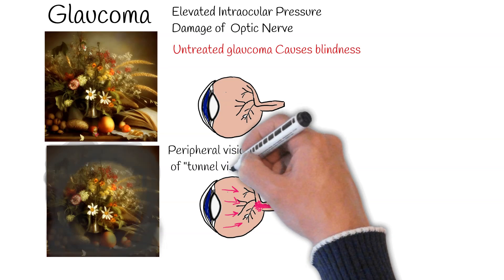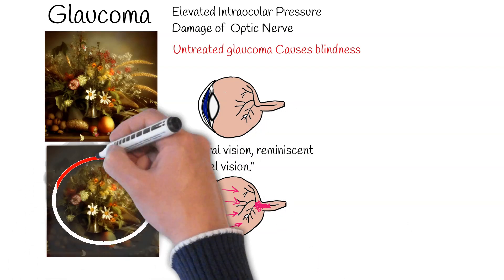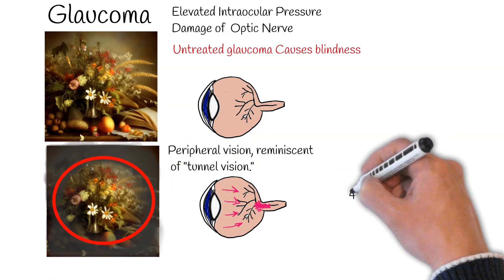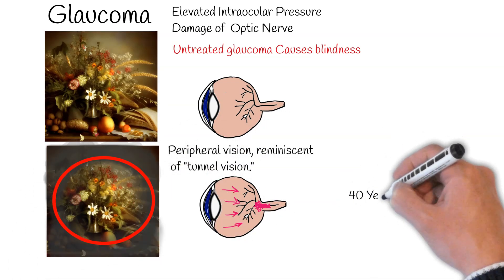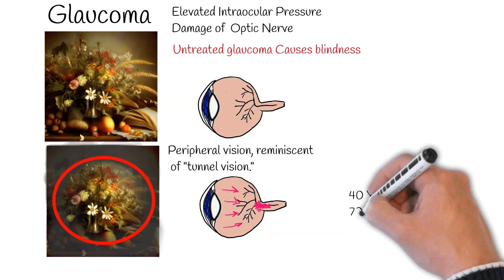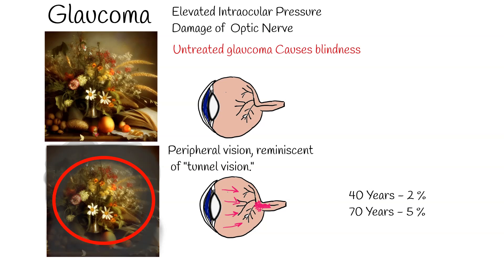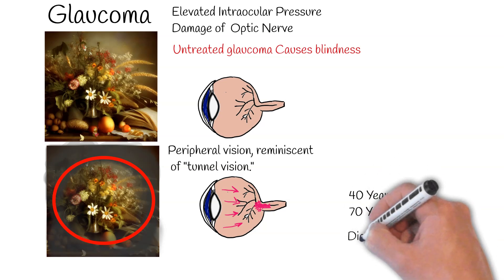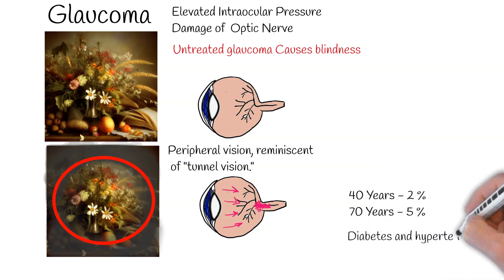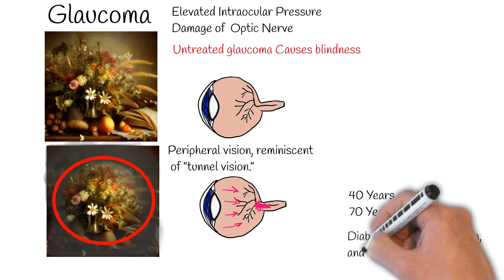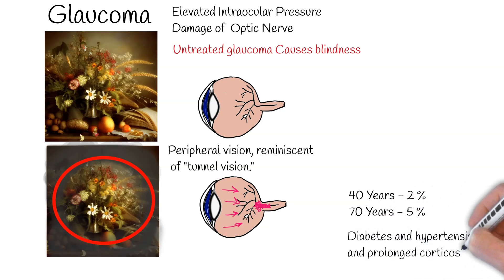The acute variant, acute angle closure glaucoma, is more aggressive. Glaucoma affects approximately 2% of individuals above 40, and this rises to 5% for those above 70. Risk factors include genetics, age, comorbidities like diabetes and hypertension, and prolonged corticosteroid use. Among these, genetics is the most potent predictor.